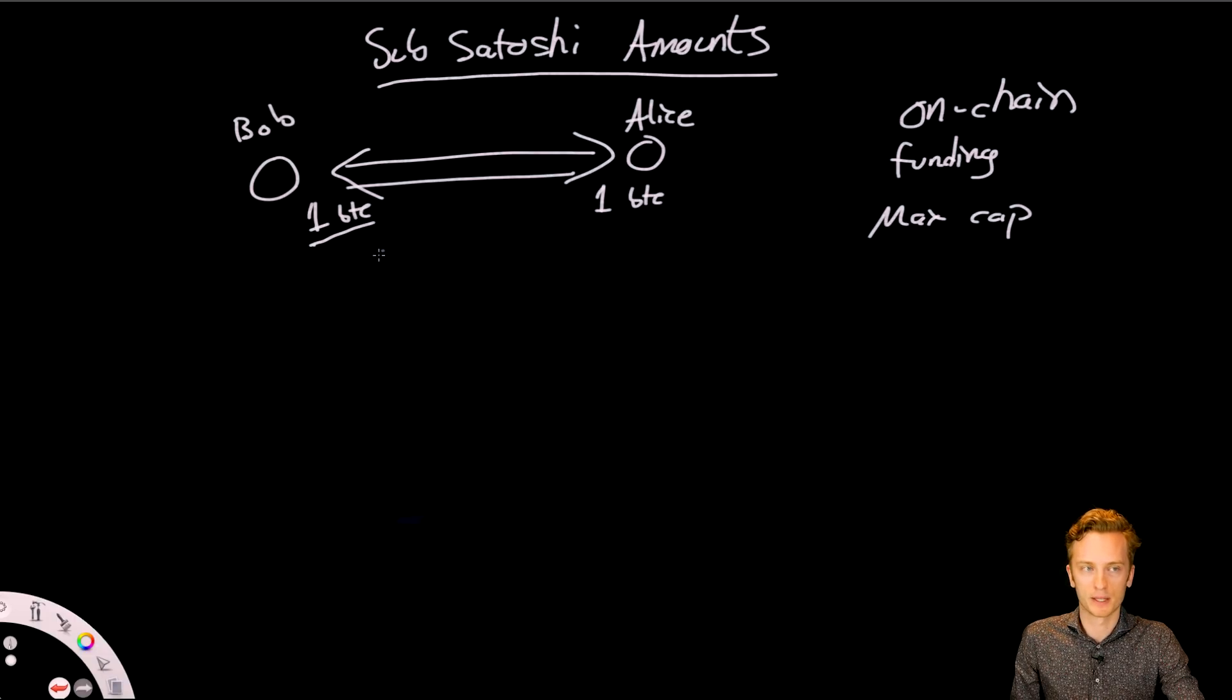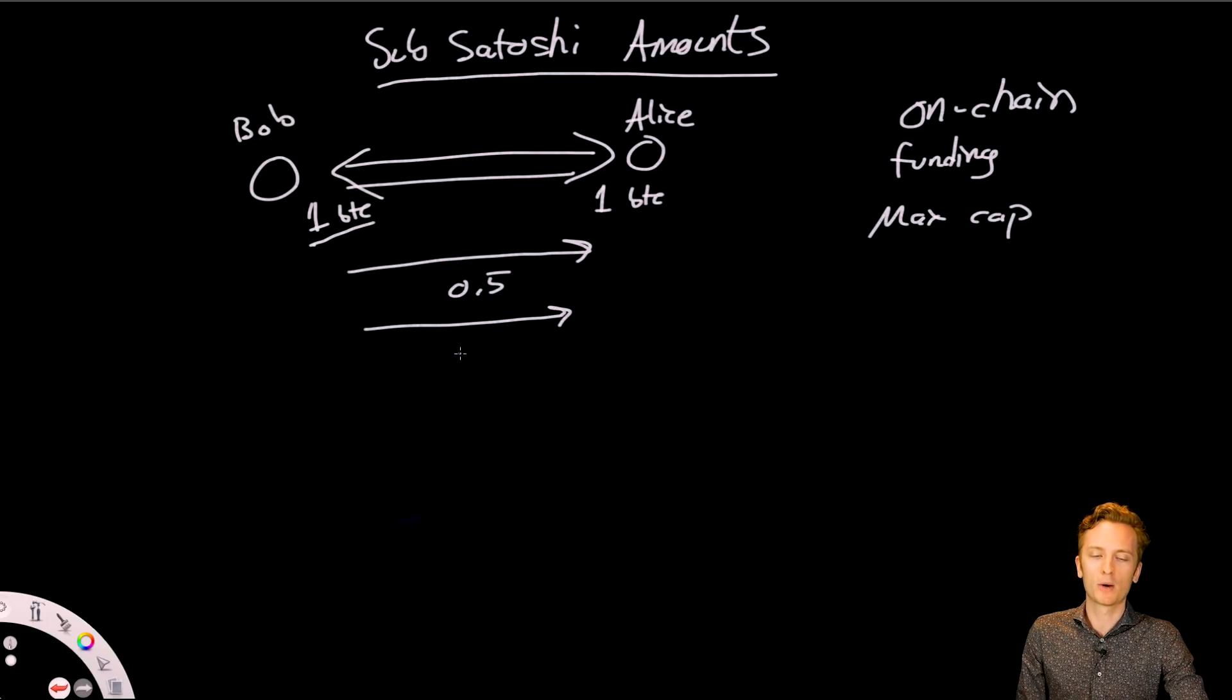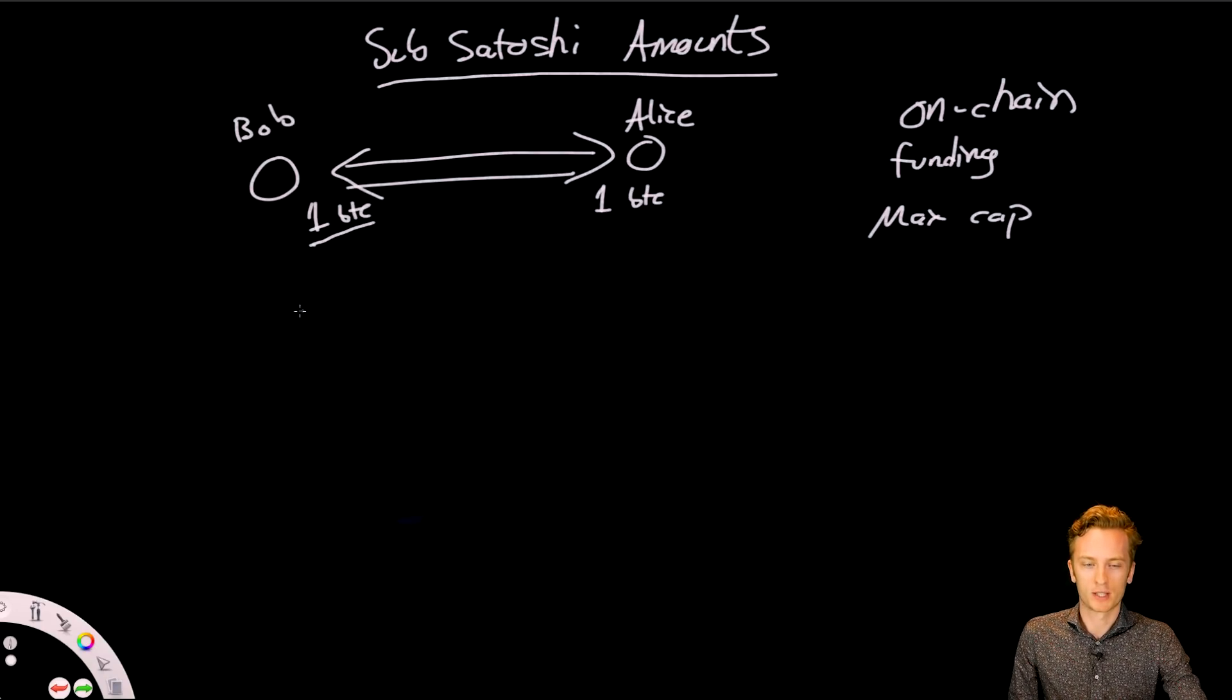So Bob could maximally send one Bitcoin over this channel to Alice. And that can be two payments of half Bitcoin, or it can be 100 million payments of one Satoshi, right? But how could he possibly send smaller amounts than one Satoshi? Well, in order to understand that, we need to understand how the Lightning Network actually keeps track of these balances.